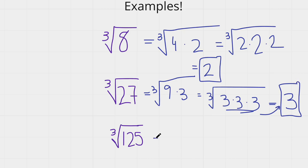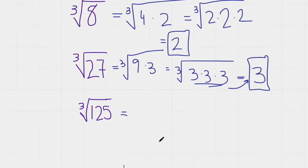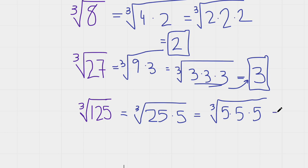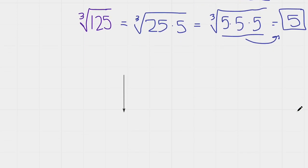Let's try the cube root of 125. We know 125 is equal to 25 times 5, and 25 is equal to 5 times 5. So as you can see the similar pattern — there are three 5s inside the cube root, so the answer would just be 5. And that's how you do cube roots. Thank you.